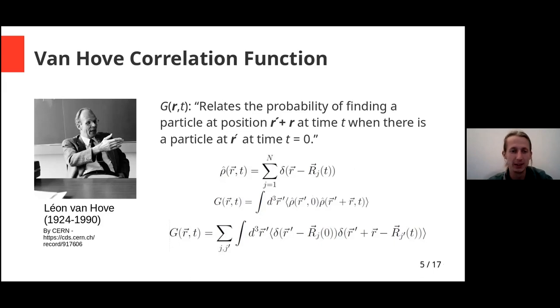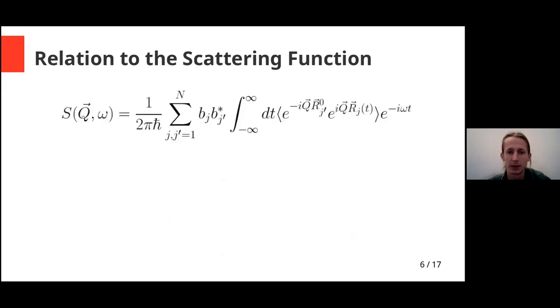So why do we need this function? The reason is it relates to the scattering function which we have already introduced. If we look closely, this function has a similar structure—it relates to two states in the case of the scattering function. But what is the big difference: in this function we don't have space and time, but we have the Q vector and omega. This gives us already a hint on how the scattering function is related to the Van Hove correlation function, which is the Fourier transform.